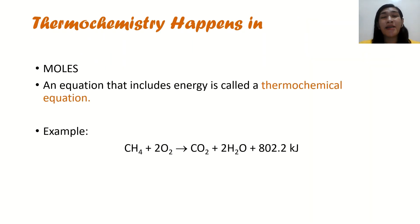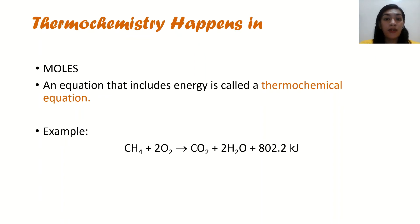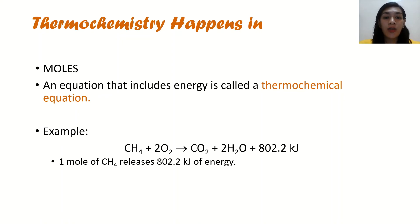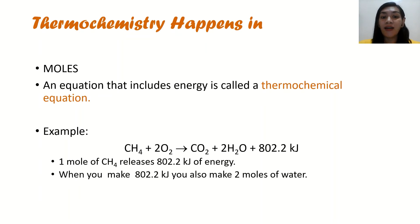Thermochemistry happens in moles. Because you remember our chemical reactions and stoichiometric problems — now we add heat. An equation that includes energy is called a thermochemical equation. For example, we have the combustion reaction of methane: methane plus oxygen produces carbon dioxide and water. You can see in the equation that one mole of methane releases 802.2 kilojoules of energy, and when 802.2 kilojoules of energy is produced, you could also make 2 moles of water.